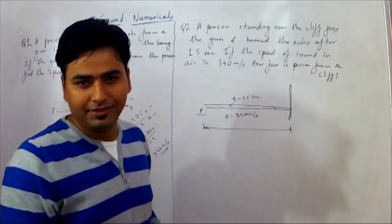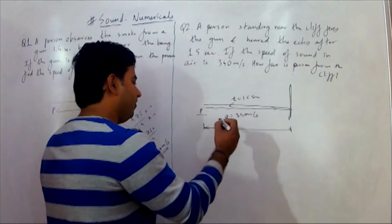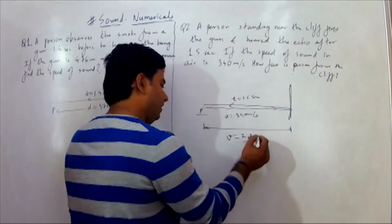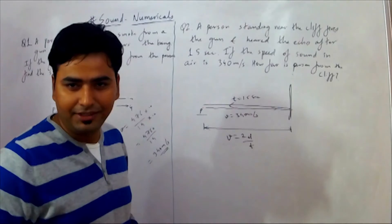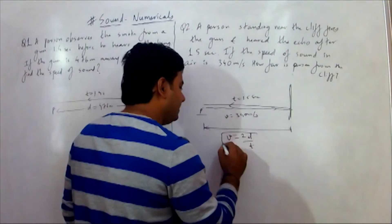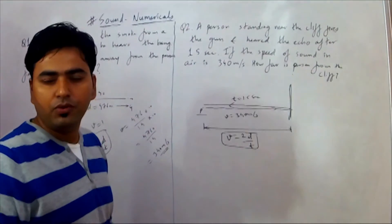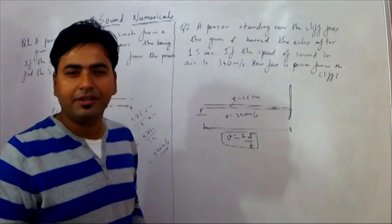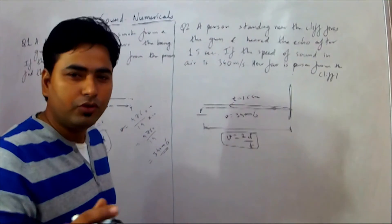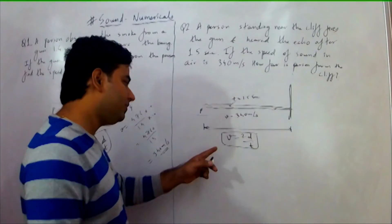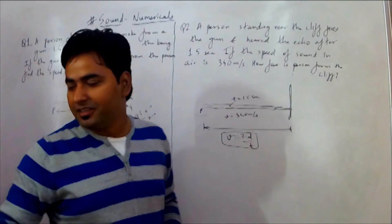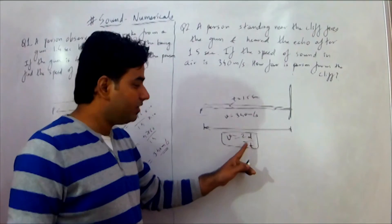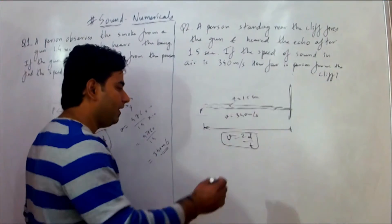The total distance travelled is 2 times d. So we have to use: speed is equal to 2d upon t. If we calculate distance, it will give one-side distance. Whenever there is an echo situation, a reflection situation, a sonar or a bat numerical — whenever there is a reflection situation — we use speed = 2d/t. If there is no reflection, it is distance upon time. If there is a reflection or echo situation, it is 2 times distance upon time.